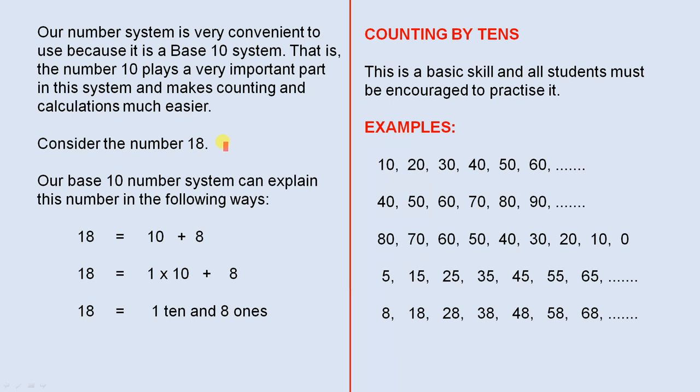Consider the number 18. Our base 10 number system can explain this number in the following ways: 18 equals 10 plus 8, 18 equals 1 times 10 plus 8, 18 equals 1 lot of 10 and 8 ones.